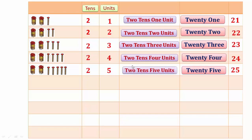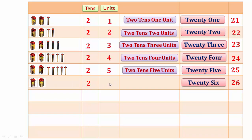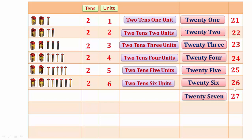In 26, two tens and six units make 26. In 27, two tens and seven units make 27.